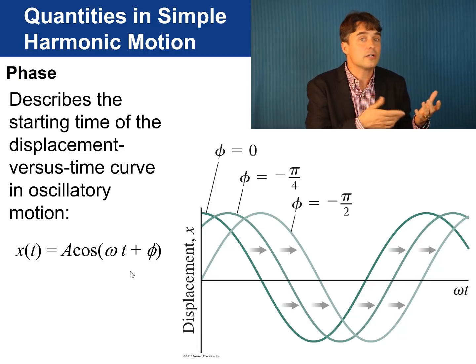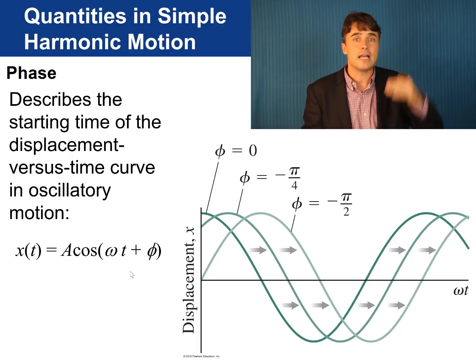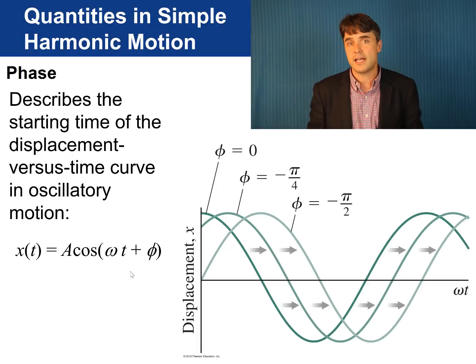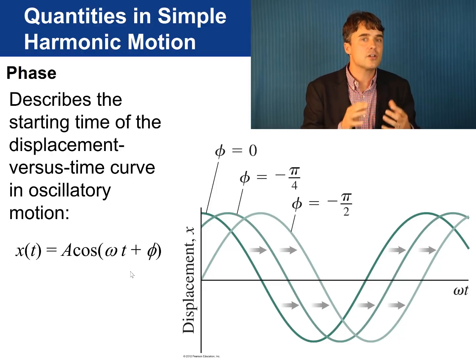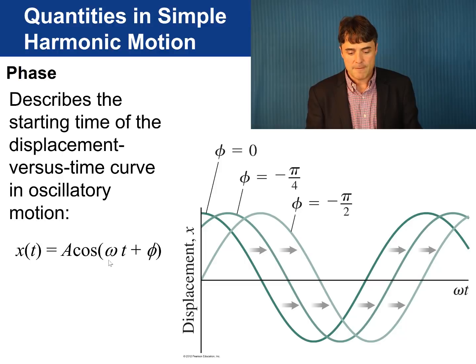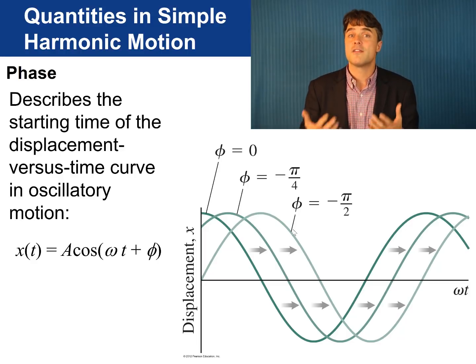But, what if the mass is not x equals A at time t equals zero? The initial condition could include a velocity and the mass could be at any position between plus A and negative A. That is what the phi is for. Phi is called the phase and it describes the starting time of the displacement versus time curve. If phi is a negative value, it shifts the cosine curve to the right, like this. Like the amplitude A, the phase is an arbitrary constant that is determined by the initial conditions.